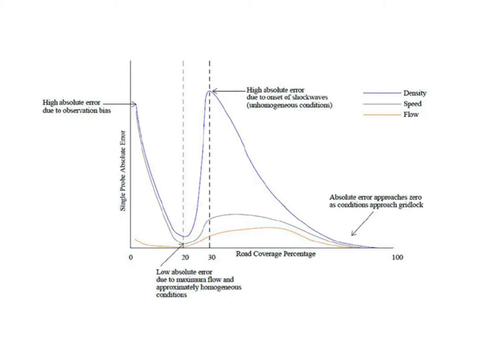If there is only one single probe collecting data in one directional pipeline, the trend of estimation errors could be like a double hump curve. At the beginning, the errors are high because the single probe is highly likely to be within a plateau and observe the locally high density. Then it reaches the point of maximum flow where traffic conditions are relatively smooth with nearly no shock waves.